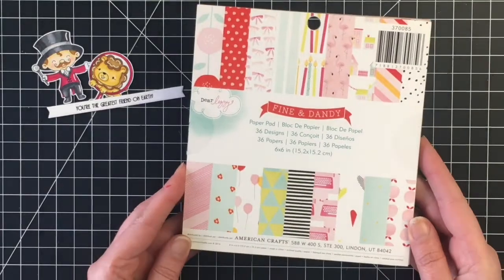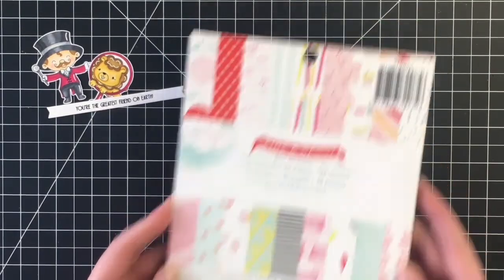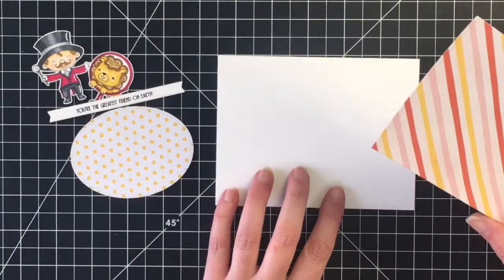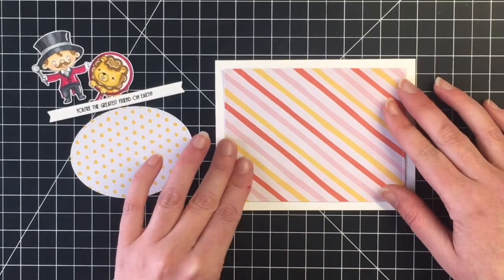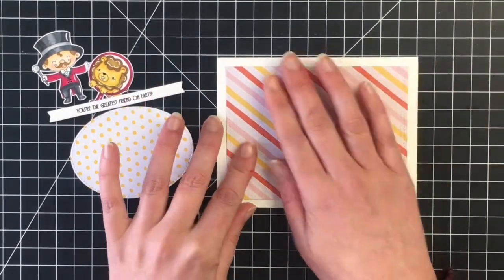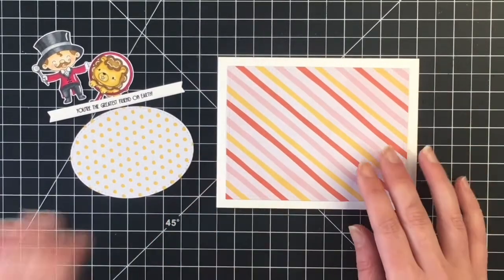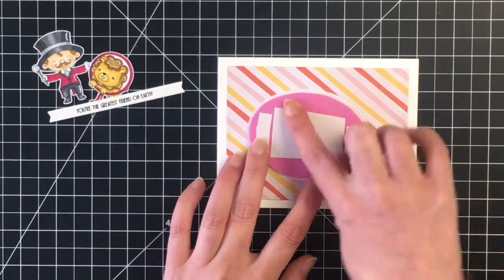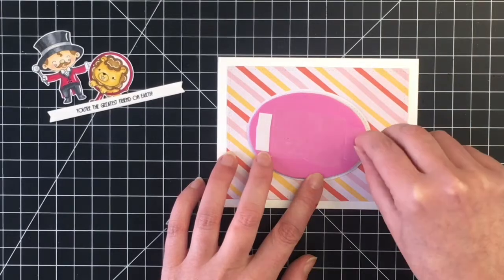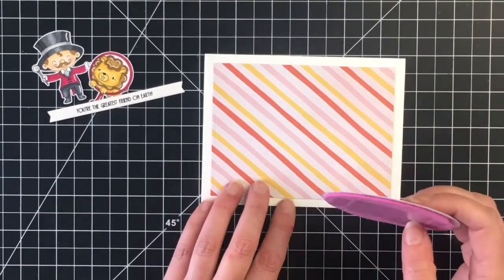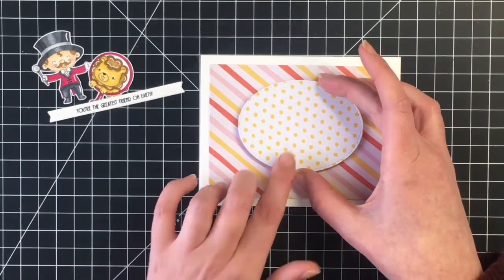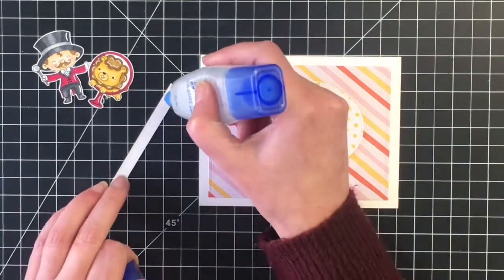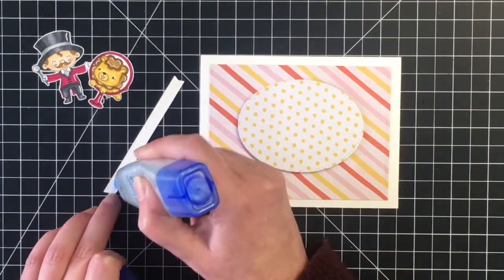So that's complete. I'm going to move on to the paper for my card. I'm using a really old paper pad. This is Fine and Dandy by Dear Lizzy, trying to use up some of my older paper stash. So I'm using this striped patterned paper on the back. I cut that out with a Lawn Fawn stitched rectangle die, and then I cut out a piece of this polka dot paper with a stitched oval die, and I'm just adding some fun foam to the back of this so it will be a bit raised off of our card panel. So that's going to be the focal spot for our images.